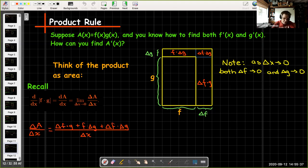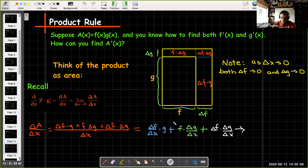So now ΔA over Δx, well ΔA has those three parts: Δf times g plus f times Δg plus Δf times Δg. So we can break that up into three terms. And then we're going to let Δx go to zero. We're going to take the limit. And what's going to happen? Well, in the first term Δf over Δx in the limit as Δx goes to zero is going to give us f'. And the limit as Δx goes to zero of Δg over Δx, that goes to g'.